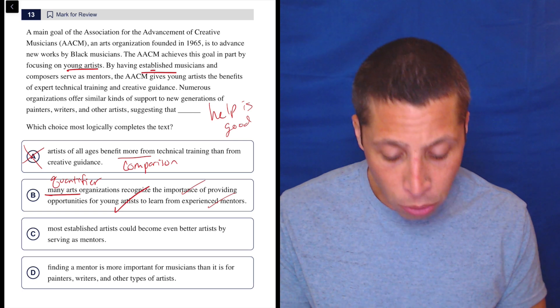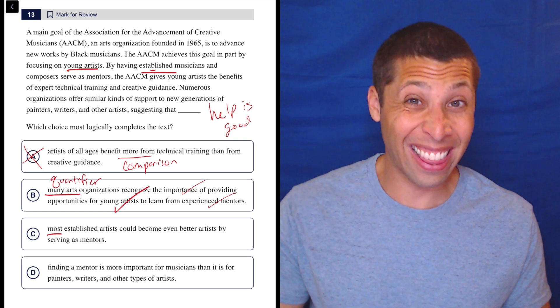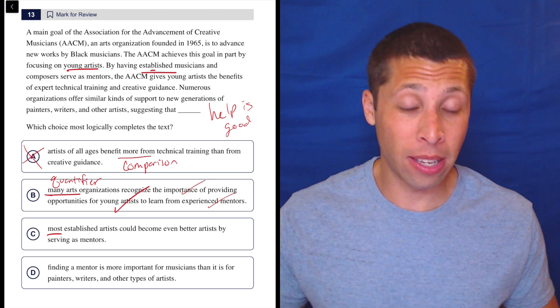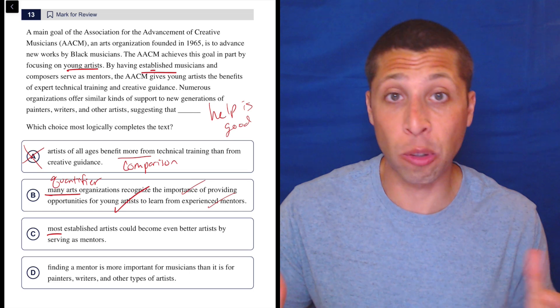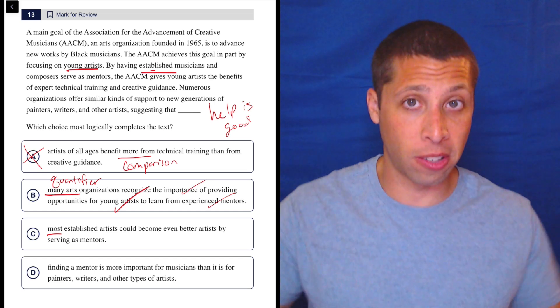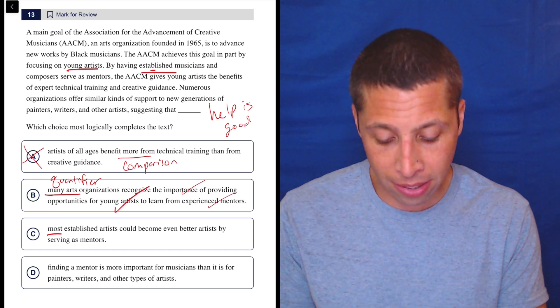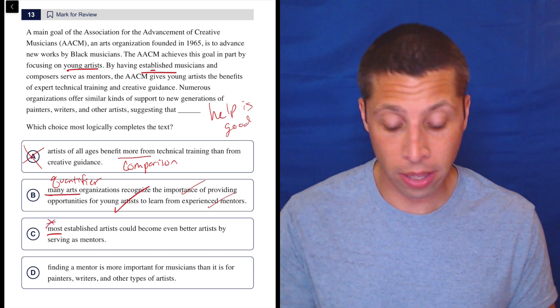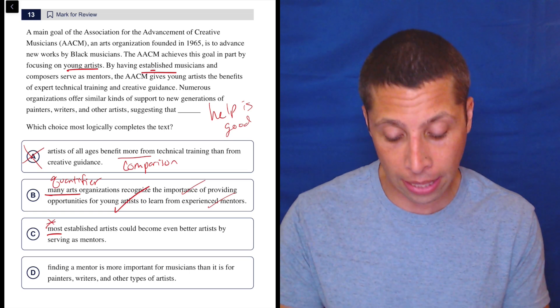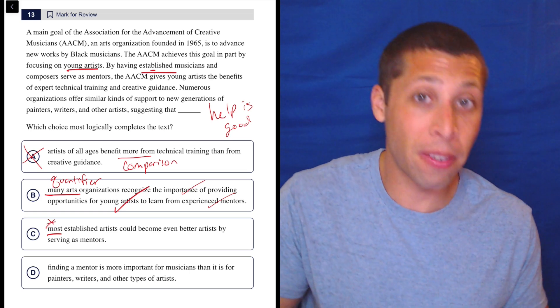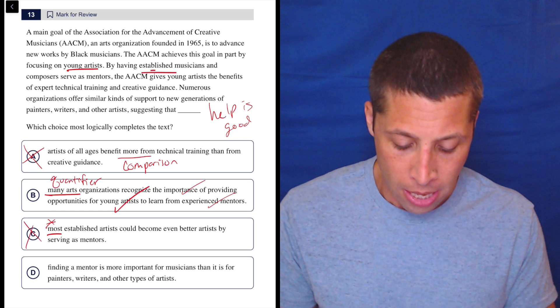Most, another quantifier, established artists could become even better artists by serving as mentors. Well, it doesn't say that. That's a much bigger claim. It's about helping the young people. I don't know what the established people are going to do. It seems much more about making the young artists better, not about making the older artists better. So no. Plus, this is a much scarier quantifier word than the word many. Most means 51% or more. That's a really big claim. Many just means a lot. Is that 100? Is that 50? Is that 50,000? I don't know. Many is a more flexible word.